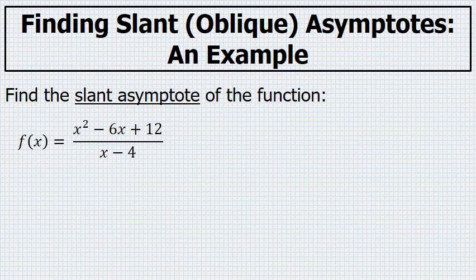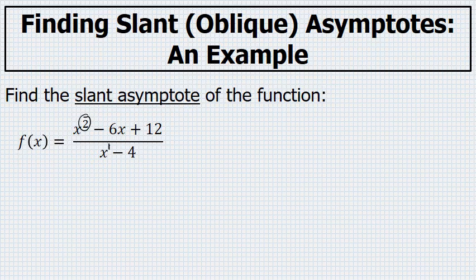Well, first we should realize that there is in fact a slant asymptote because the degree of the numerator, 2, is exactly 1 greater than the degree of the denominator, 1.